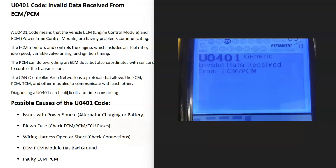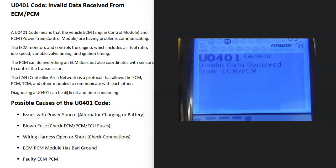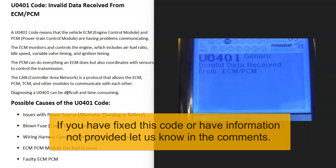Today I'm talking about a U0401 code, what it is, and how you go about fixing it. A U0401 code is invalid data received from ECM/PCM.